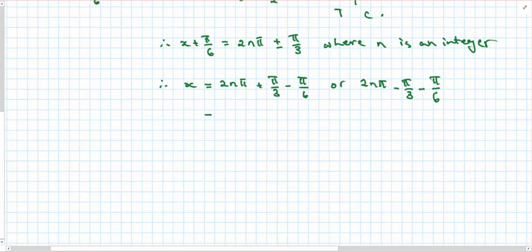Therefore my final general solution would be 2nπ + π/6, as π/3 - π/6 is π/6.